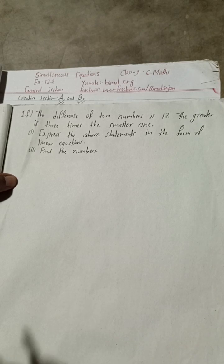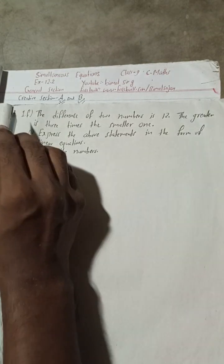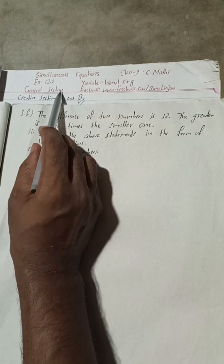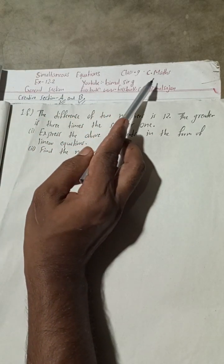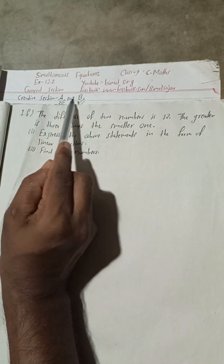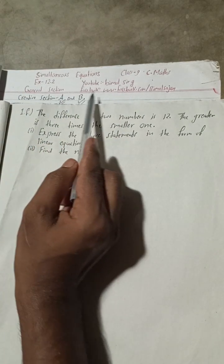Hi everybody, welcome back to Bimald Sarji YouTube channel. This is question number 1F of general section Exercise 12.2: Simultaneous Equations, Class 9 Compulsory Maths. Solutions for creative section A and creative section B have all been uploaded in my Bimald Sarji YouTube channel.